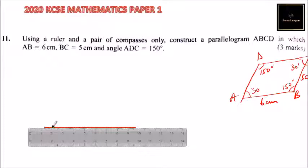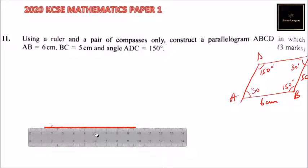You can measure 6 cm — 1, 2, 3, 4, 5, 6 — and that is our line AB.